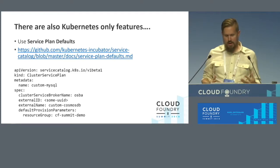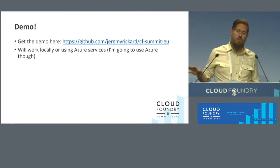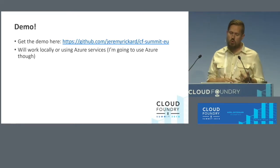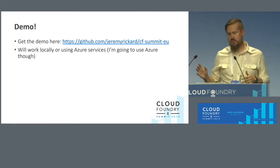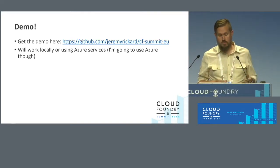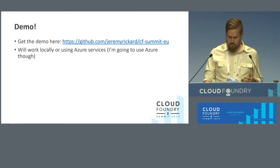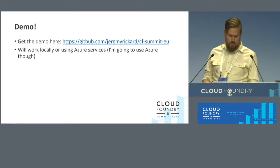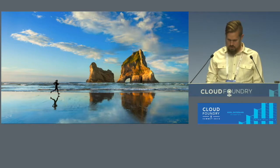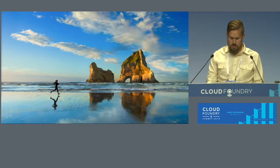The best way to hammer it home is to really do a couple of demonstrations. This will all be available on GitHub — I haven't pushed it yet because I was just finishing it yesterday, but it will work locally and also using Azure resources. Locally you can use Minikube and something called Minibroker that will deploy Helm charts onto your cluster for you automatically. So I'm going to jump over from this PowerPoint presentation and do some demo now. I have a cluster already built — just a Kubernetes cluster with some nodes.